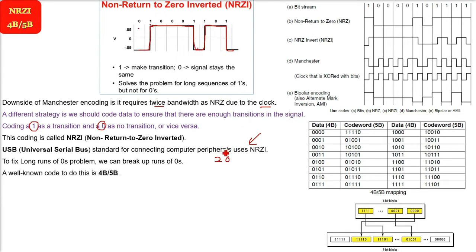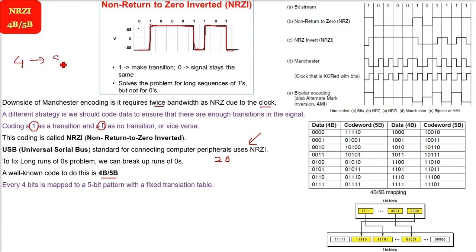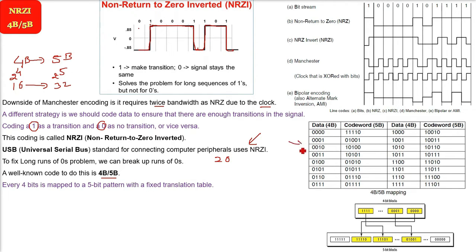So the strategy for this — there is a well-known code called 4B5B. What does it do? Every 4-bit pattern is mapped to a 5-bit pattern, and there will be a fixed transition table. 4-bit is 2 to the power 4, so 16 combinations. 5-bit is 2 to the power 5, that is 32 combinations. So we are mapping the 4-bit to 5-bit, and there will be a fixed transition table that you see here also.